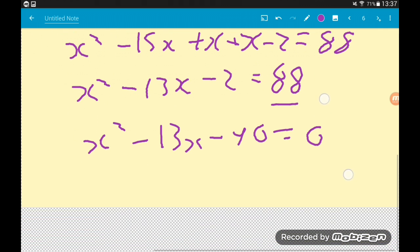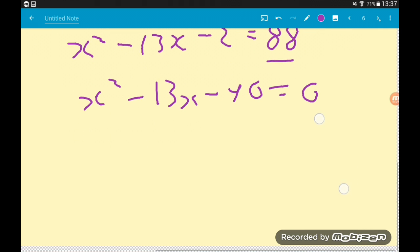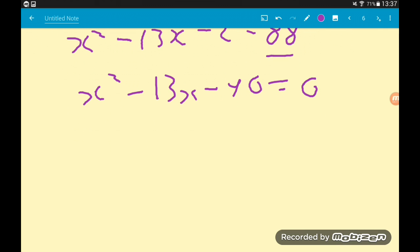We now need to solve this bad boy. We can do this by factorizing, which is good. We need two pairs of brackets with a single x in each one. Our two numbers need to multiply together to give us minus 90 and add together to give us minus 13.